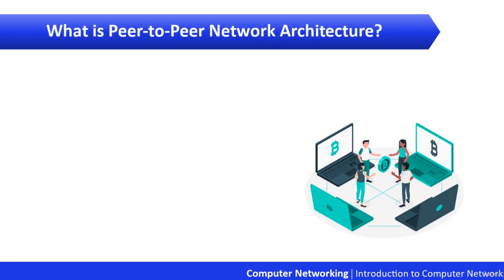So what is a peer-to-peer network architecture? Computers connected together in peer-to-peer architecture do not have any central or special authority. They're all peers, meaning that when it comes to authority they're all equals — just like your group of friends, where no one has the authority to judge you or to decide who is greater.